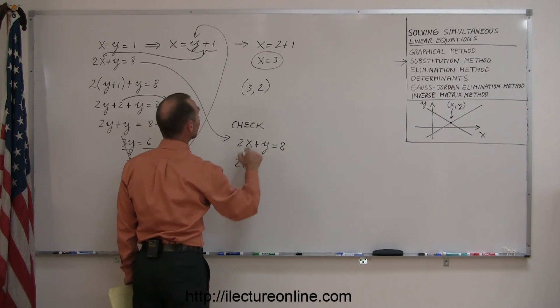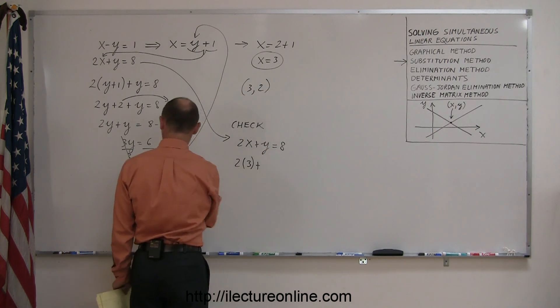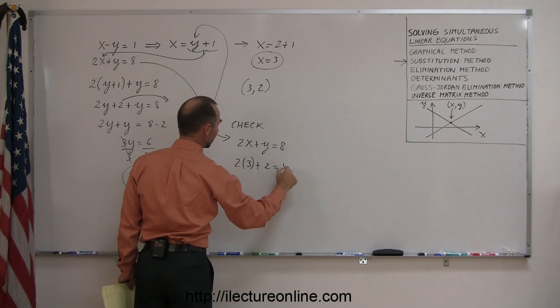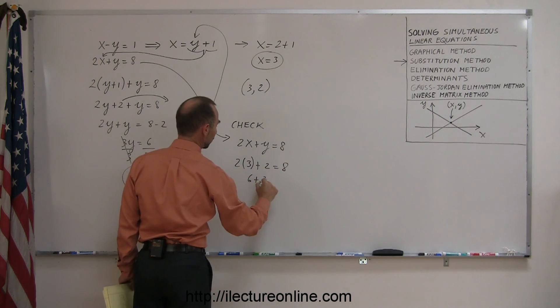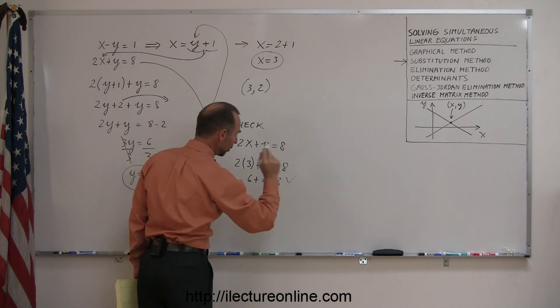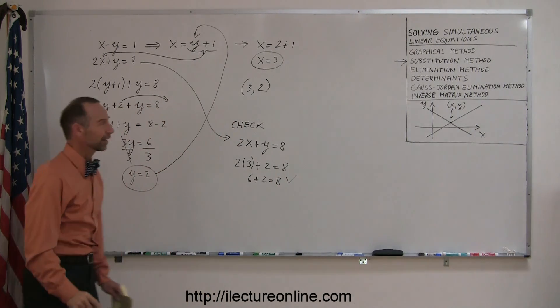So 2 times x, x is 3, plus y, which is 2, that should equal 8. So this is 6 plus 2 equals 8, and that's indeed true, so it shows that I found the correct answer.